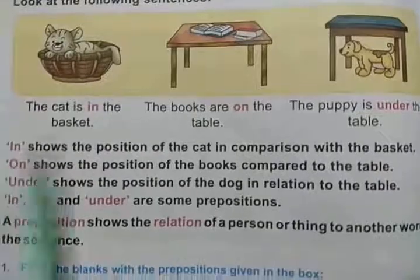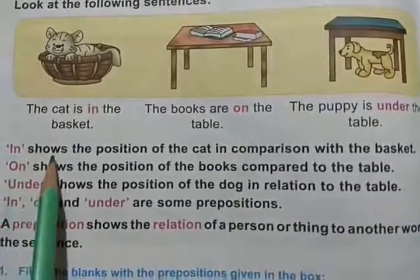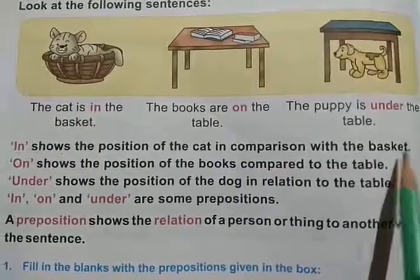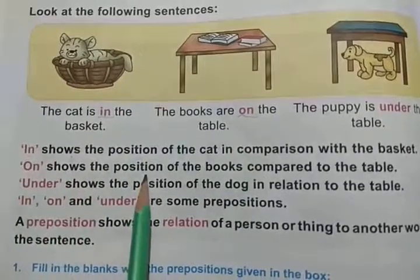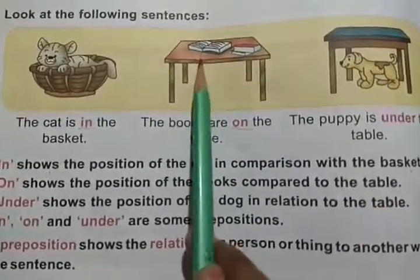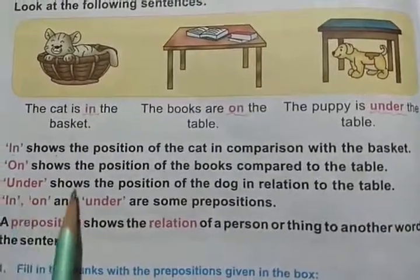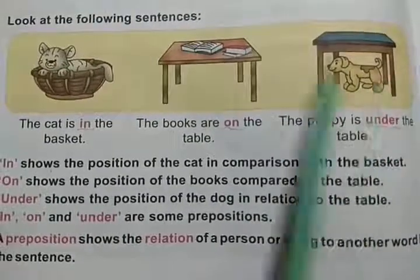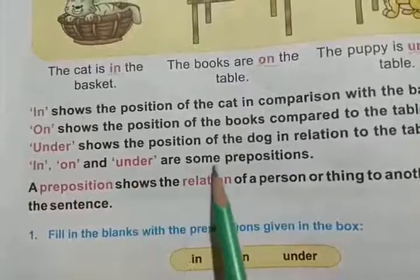So here you can see — from the first picture, 'in' shows the position of the cat in comparison with the basket. You can see this word in red color. And next, 'on' shows the position of the books compared to the table. 'Under' shows the position of the dog in relation to the table. So here, in, on, and under are some prepositions.